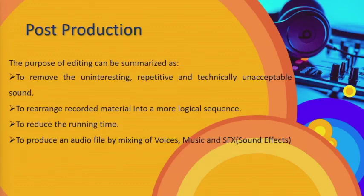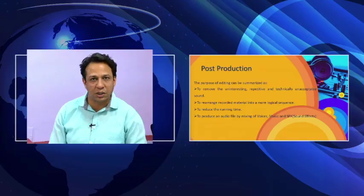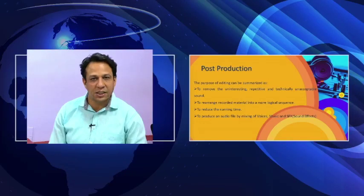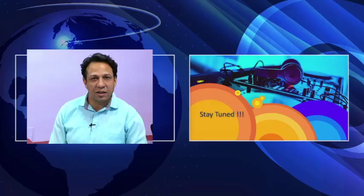The purpose of editing can be summarized as: to remove uninteresting, repetitive, and technically unacceptable sounds; to rearrange recorded material into a more logical sequence; to reduce the running time; and finally, to produce an audio file by mixing voices, music, and sound effects. So these are the three stages of radio program production.